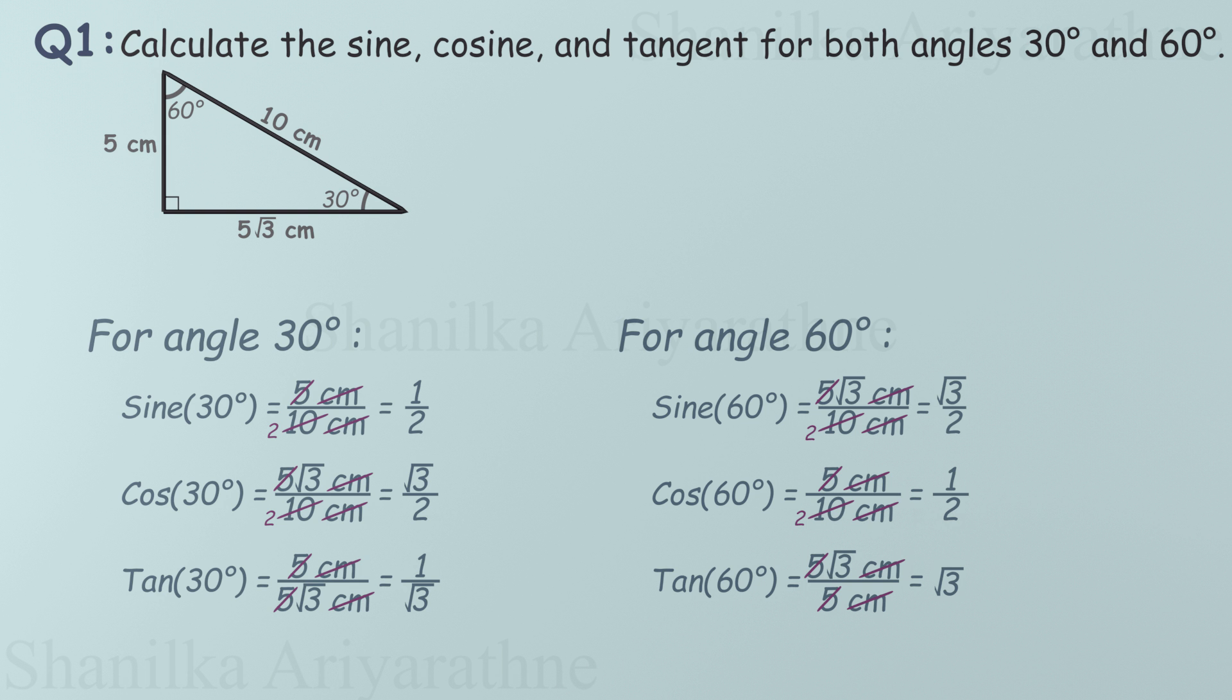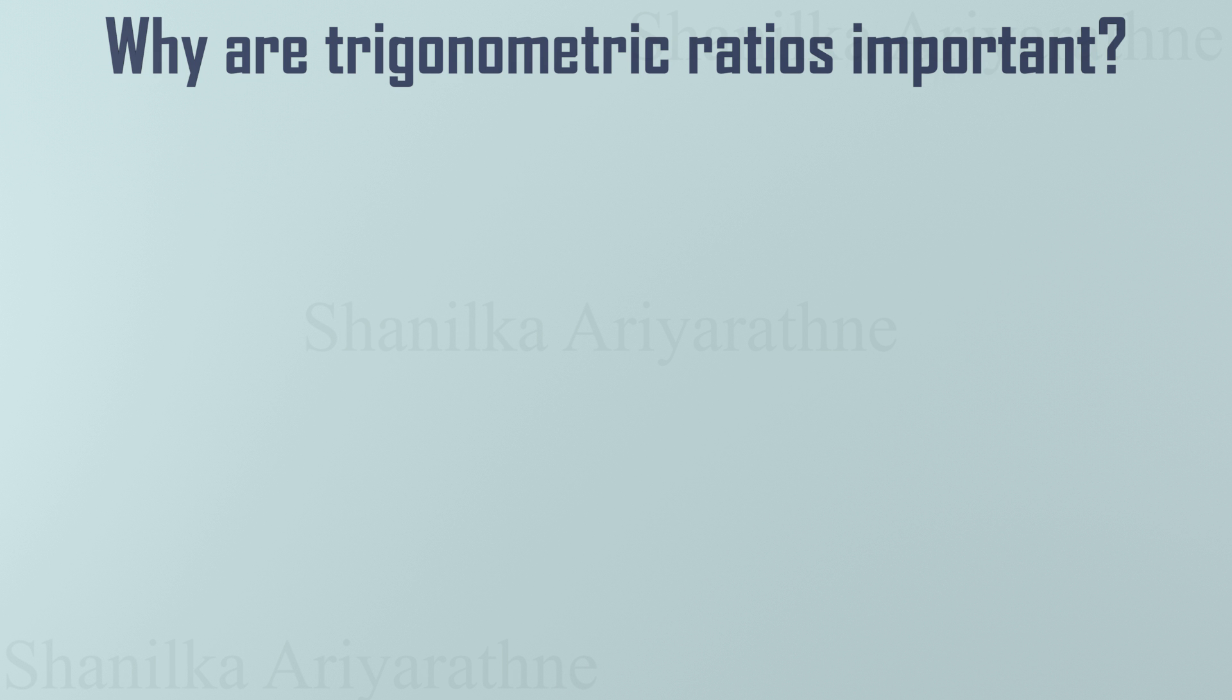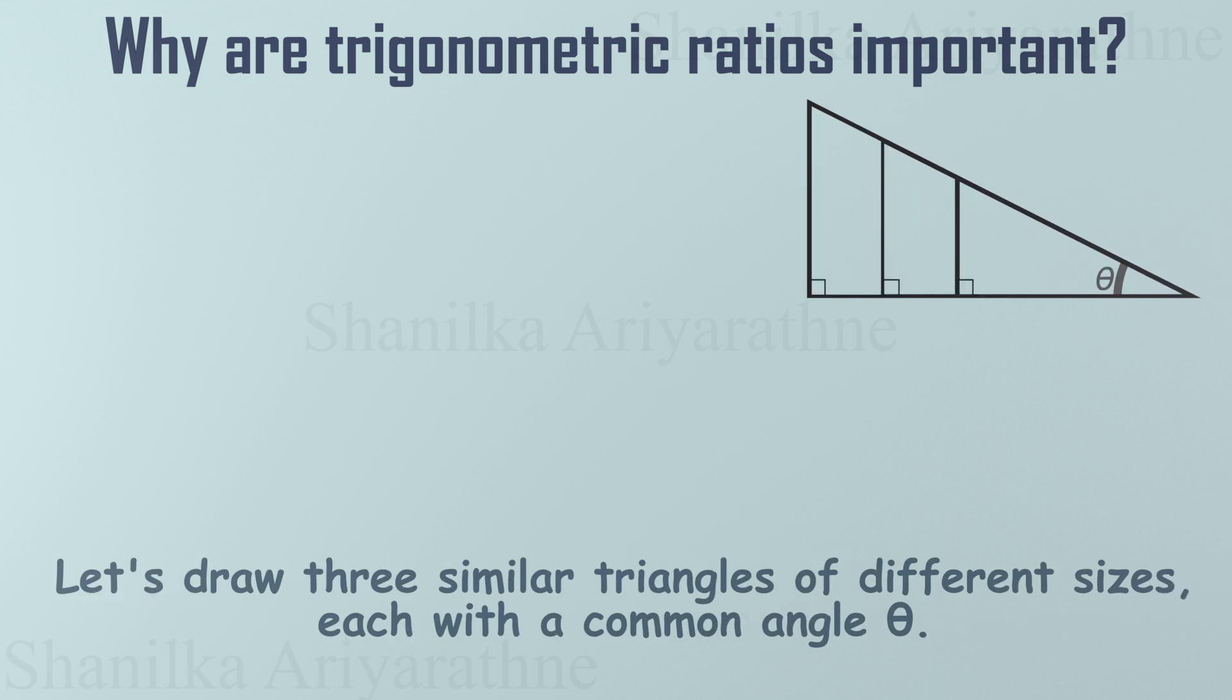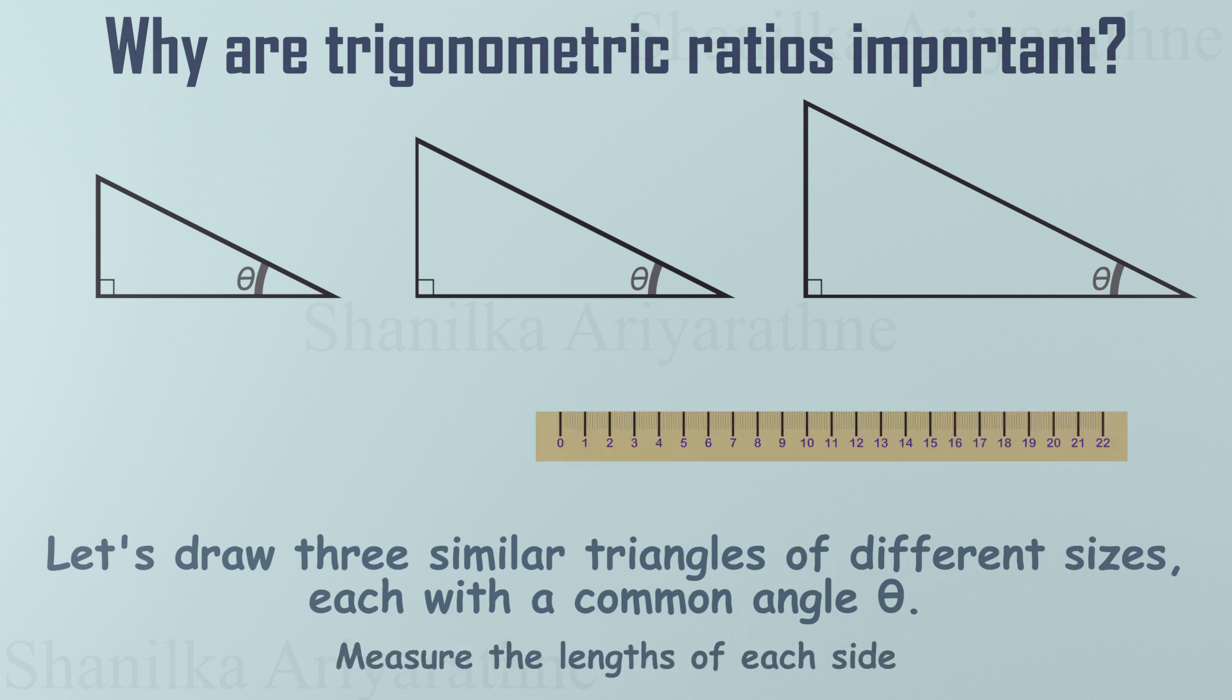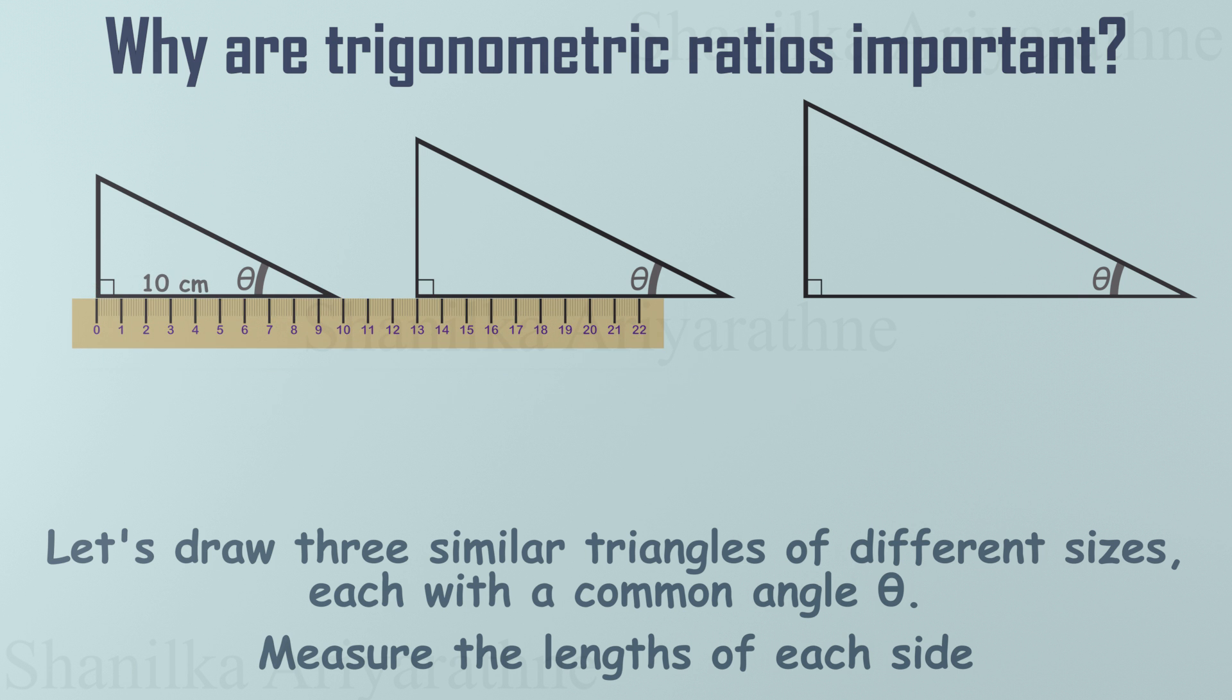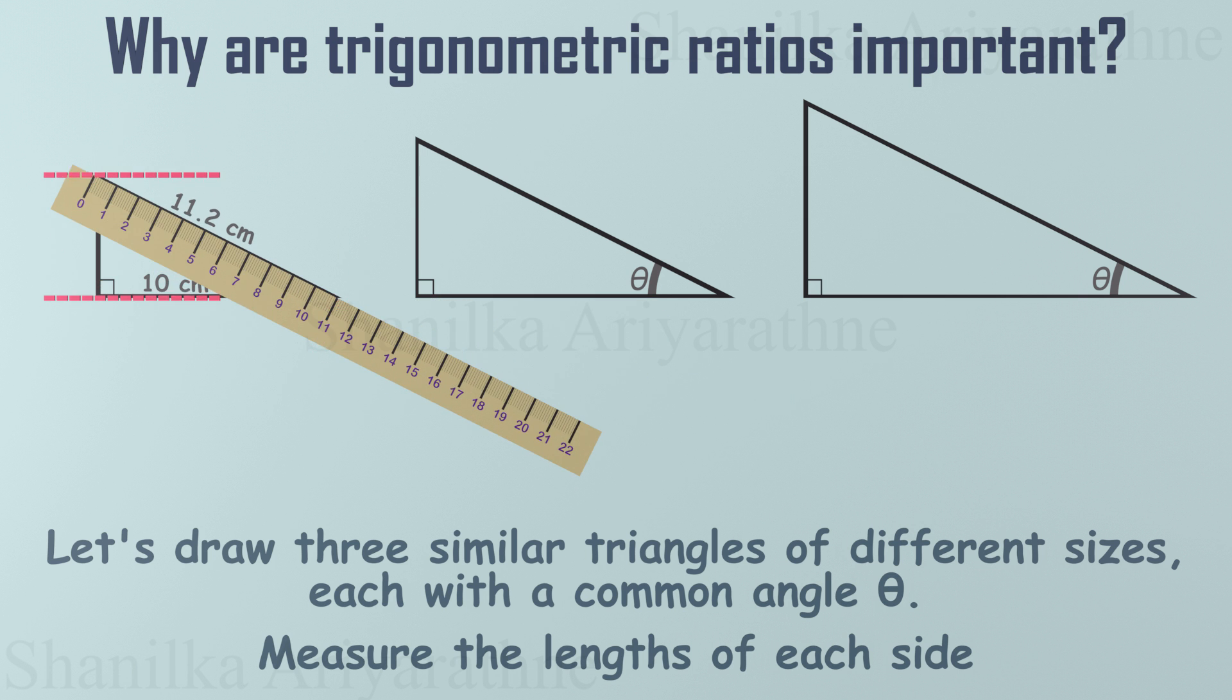Now that we've got the basics of sine, cosine, and tangent down, you might be wondering, why do these ratios even matter? Well, let's find out with a simple experiment. Here's what to do. Try drawing three similar triangles, all different sizes, but each with the same angle theta. You can grab a ruler and try this on your own. Now measure the lengths of each side. Your measurements might be different from mine. It's okay.